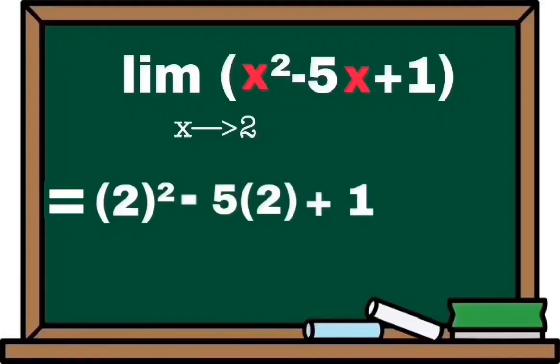Okay, so let's simplify it. 2 raised to 2 is 4 minus 5 times 2 equals 10 plus 1.